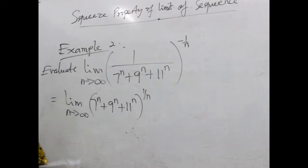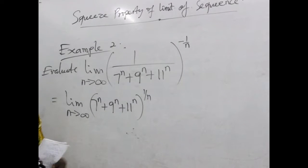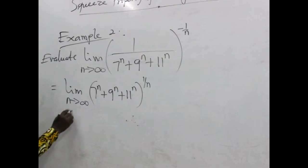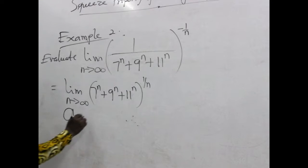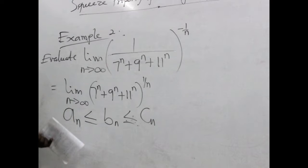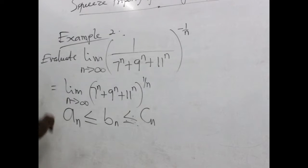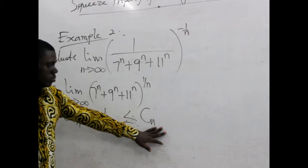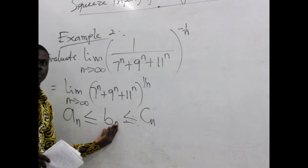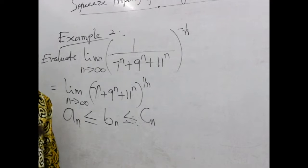Let's go ahead and use the squeeze property to evaluate this. Using the squeeze property, you need to remember under what condition it is applicable. It is used when we have a sequence less than or equal to another sequence, less than or equal to another. When we find the limit of the outer sequences as n approaches infinity and both equal the same value, then by the squeeze property the limit of the sequence in the middle equals that same value.